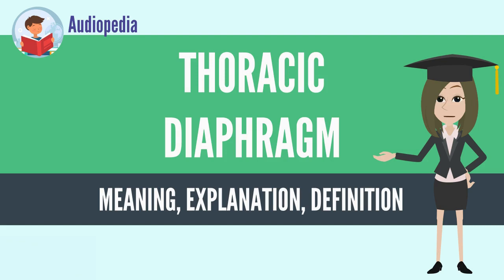There is also a theory that the diaphragm is lower on the other side due to the presence of the heart. Other mammals have diaphragms, and other vertebrates such as amphibians and reptiles have diaphragm-like structures, but important details of the anatomy vary, such as the position of the lungs in the abdominal cavity.